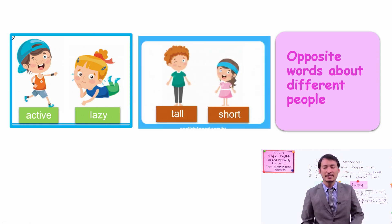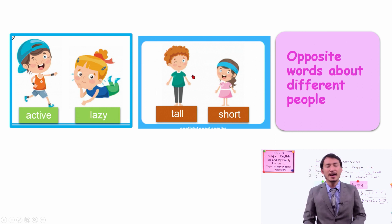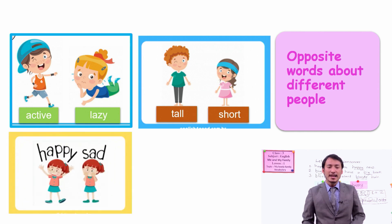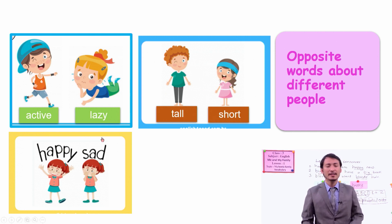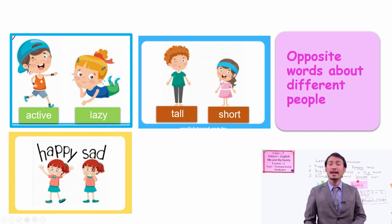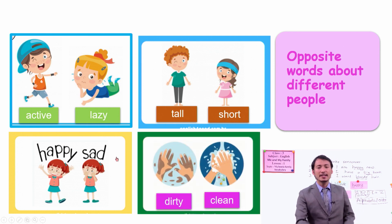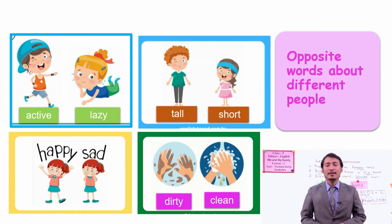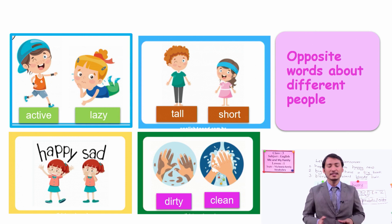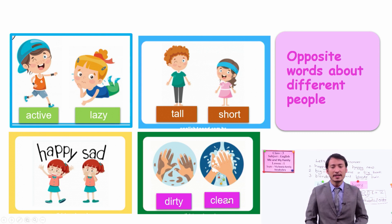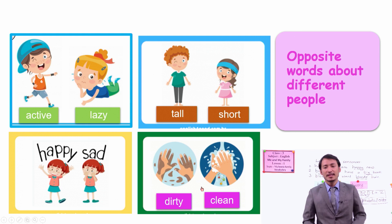Another one is tall and short. Tall means having higher height, and short means lower height. Another one is happy and sad — it is about feeling. When you are getting good things, learning well in school, you are happy. When you can't learn, when you don't achieve good marks, you are sad. Dirty and clean are another pair of opposite words — dirty means having mud on your hands, and cleaning means washing with water and soap.